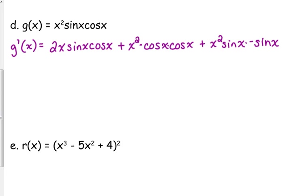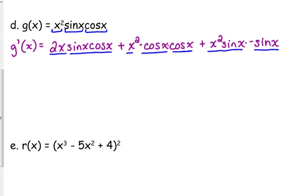We got the first step down, now we need to simplify. With three terms, I went through it methodically. The derivative of the first term was 2x, multiplied by the other two terms. Then plus the derivative of the second term — the derivative of sine is cosine — multiplied by the other two: x squared and cosine of x. And then the last one, I multiplied the derivative of the third term, the derivative of cosine being negative sine of x, times the first two terms.